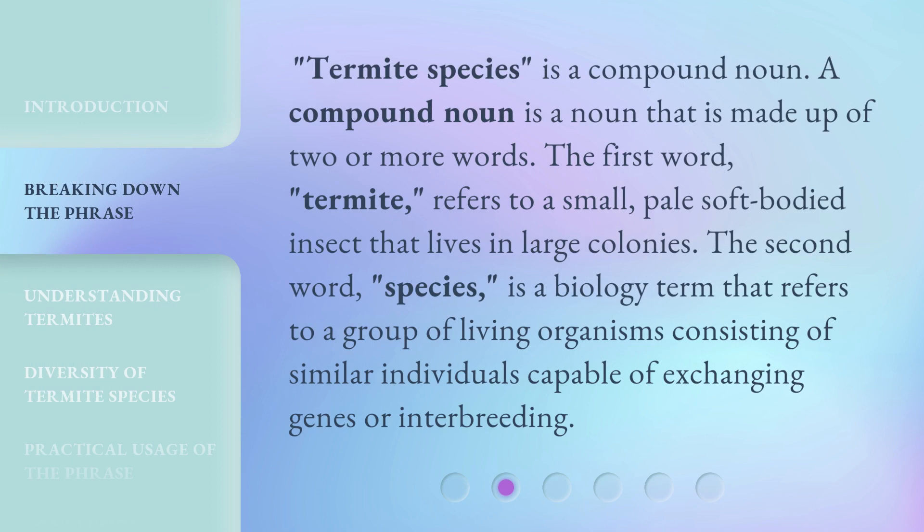Termite species is a compound noun. A compound noun is a noun that is made up of two or more words. The first word, 'termite,' refers to a small, pale, soft-bodied insect that lives in large colonies. The second word, 'species,' is a biology term that refers to a group of living organisms consisting of similar individuals capable of exchanging genes or interbreeding.